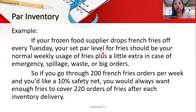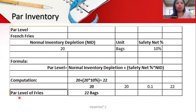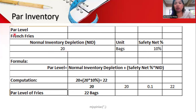For example, if your frozen food supplier delivers french fries every Tuesday, your set par level should be your normal weekly usage of fries plus a little extra for emergencies. If you go through 200 fries per week and want a safety net of 10%, you calculate accordingly. In our example, the normal inventory depletion is 20 bags, where one bag contains 10 servings of fries.